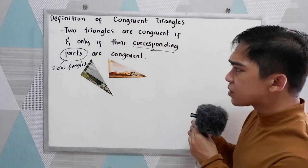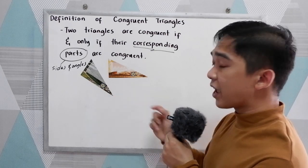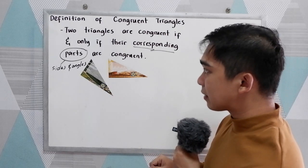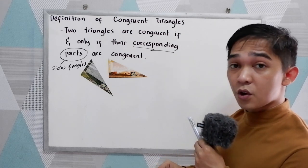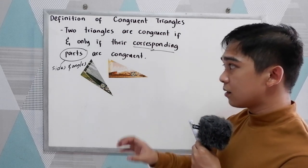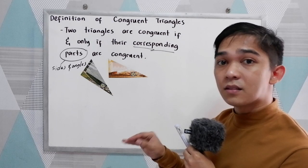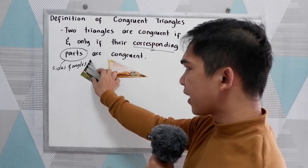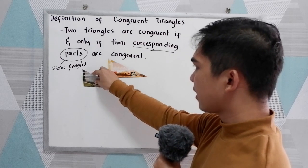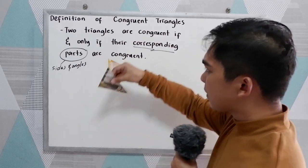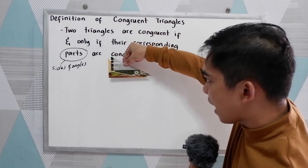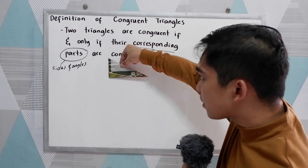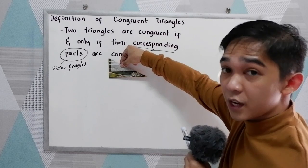Now let us use two triangles here. We know that they are congruent if we are going to test the sides and their angles. I will get the first triangle and place it on the second triangle on top. If I put it here, we know that they are congruent or equal.